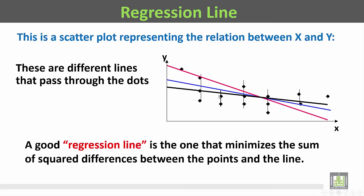A good regression line is the one that minimizes the sum of squared differences between the points and the line. خط الانحدار الجيد هو ذلك الخط الذي يمر من خلال هذه النقاط بحيث تكون مربعات الابتعاد بين هذه النقاط والعمود النازل على خط الانحدار مجموعها أقل ما يمكن.